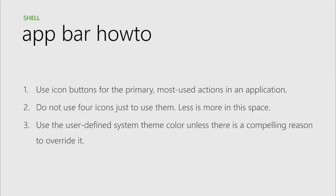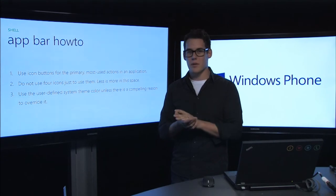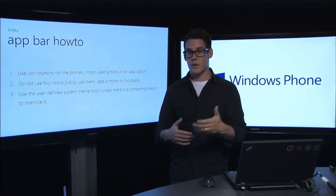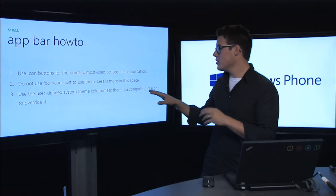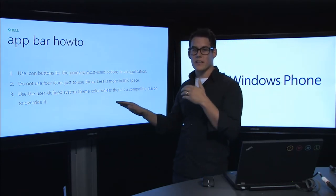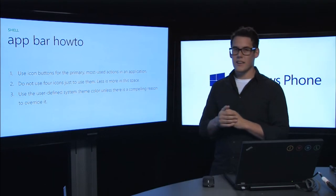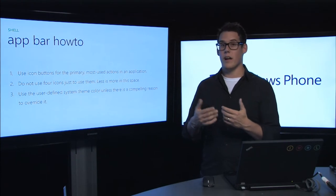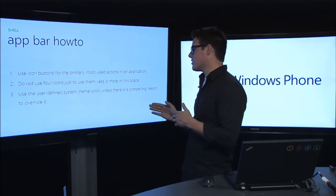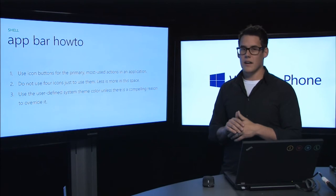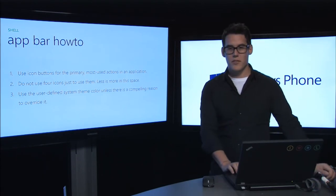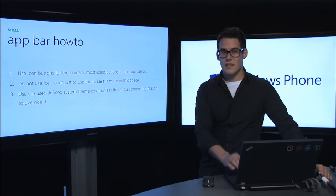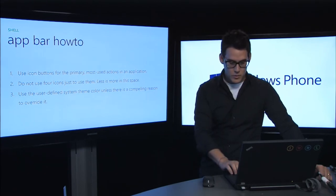Use the user-defined system theme colors unless there's a compelling reason to override them. Windows Phone supports light and dark themes as well as accent colors — if you use the defaults, everything will work perfectly and text will be legible. As soon as you start tweaking that, your use cases and testing requirements go up significantly. If you have a highly customized app, put in the time to test it against both light and dark themes.